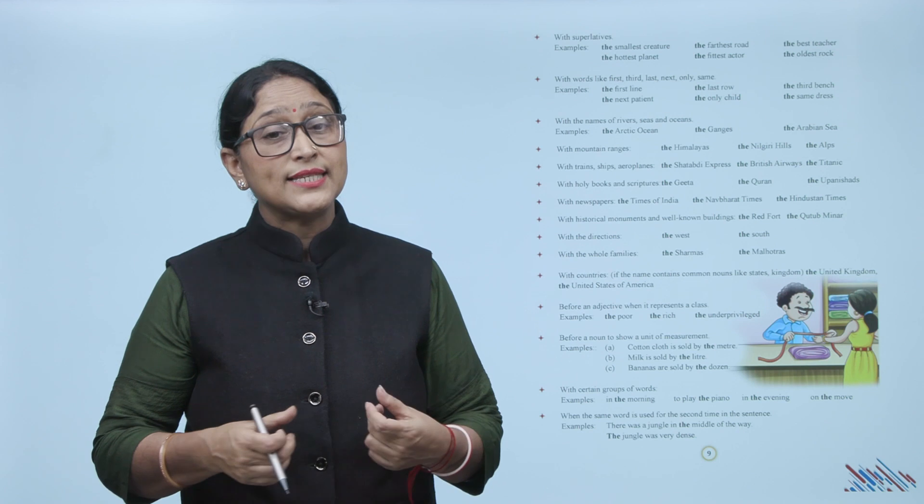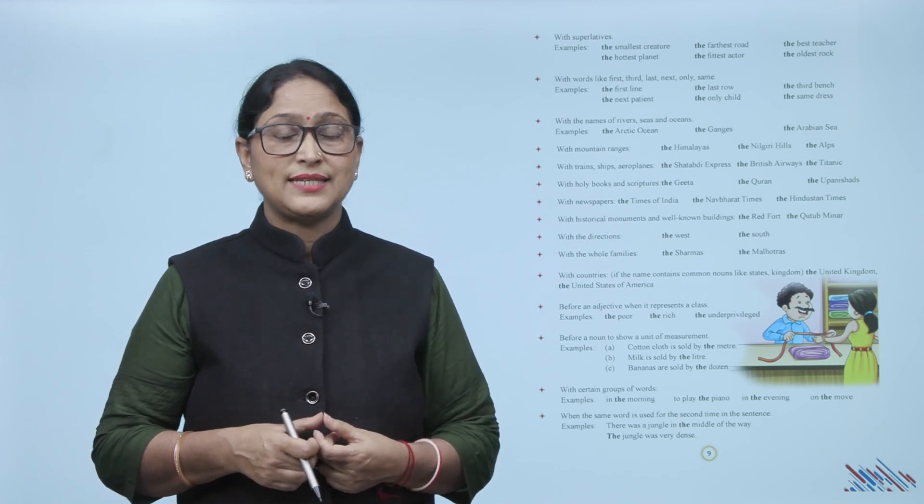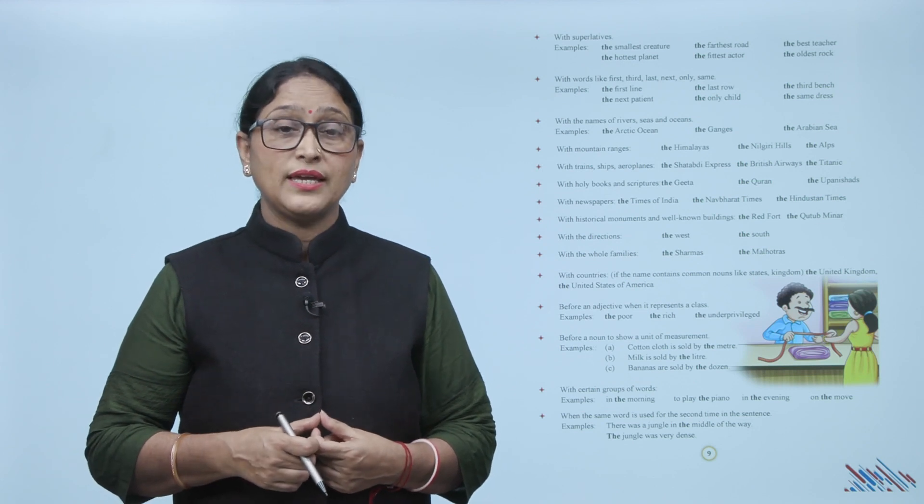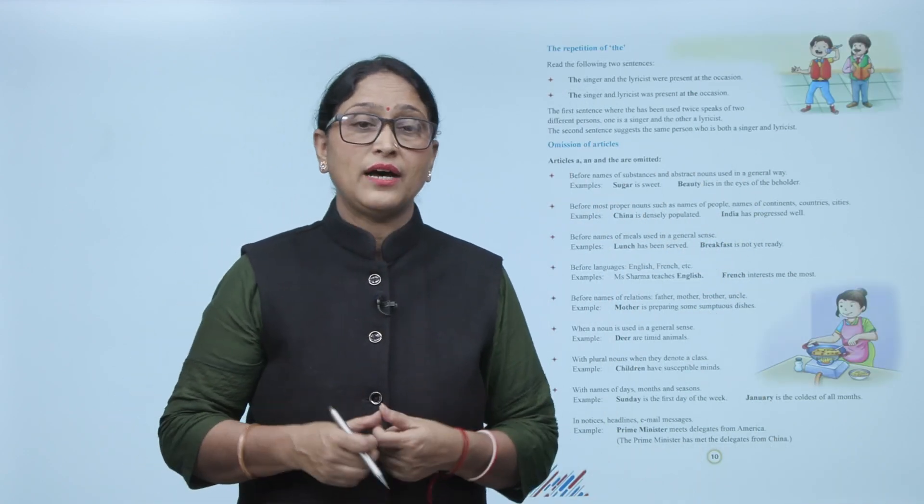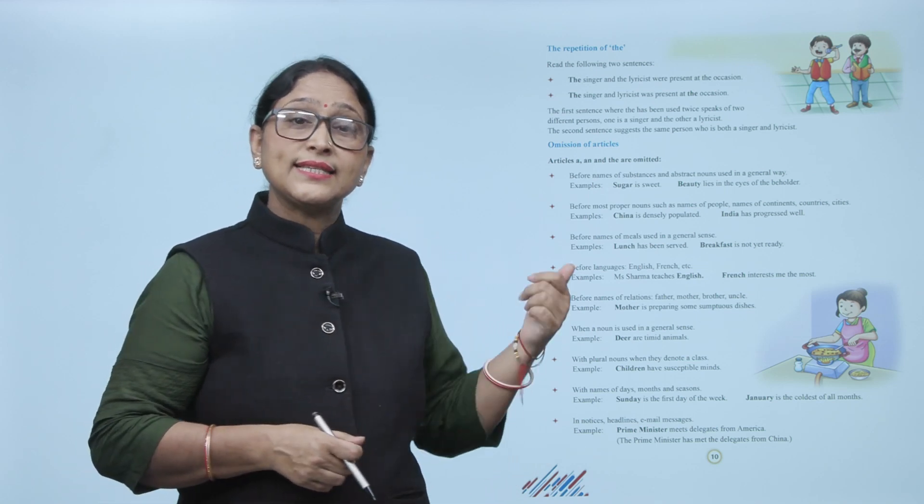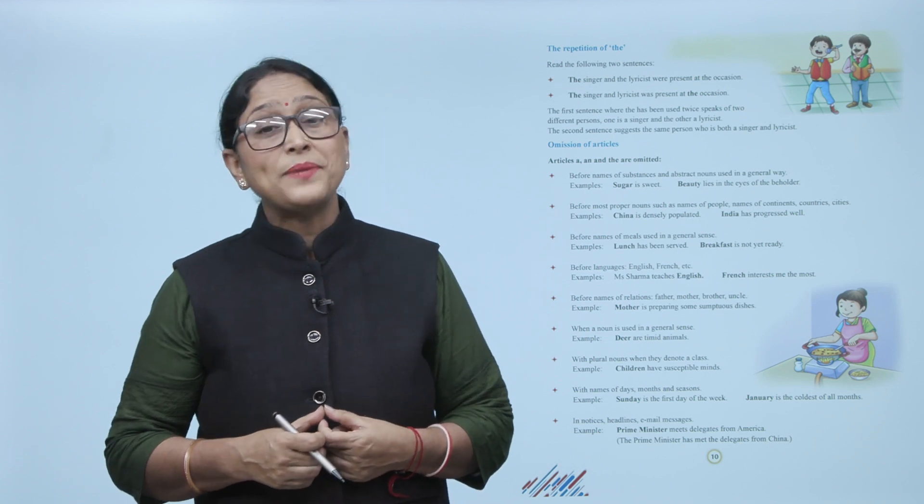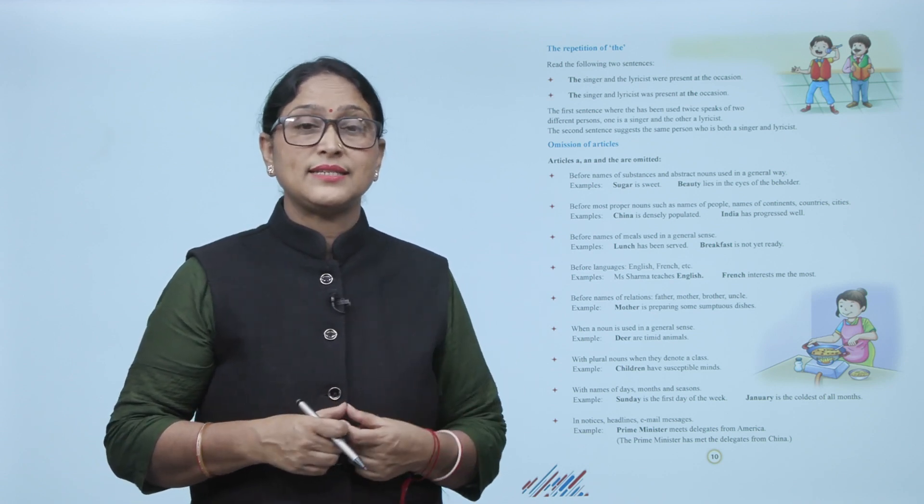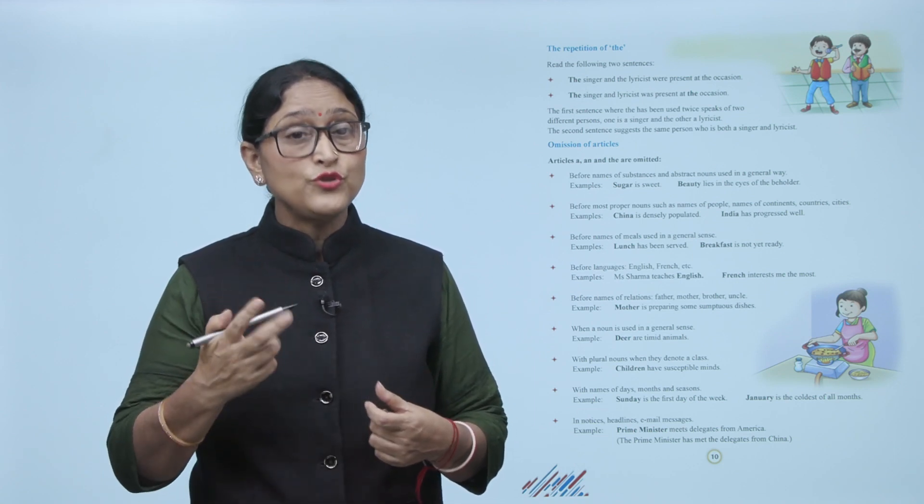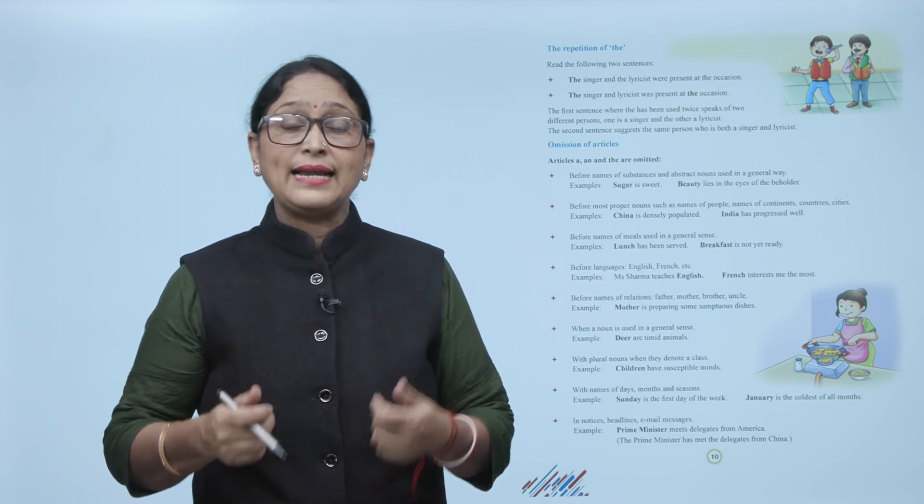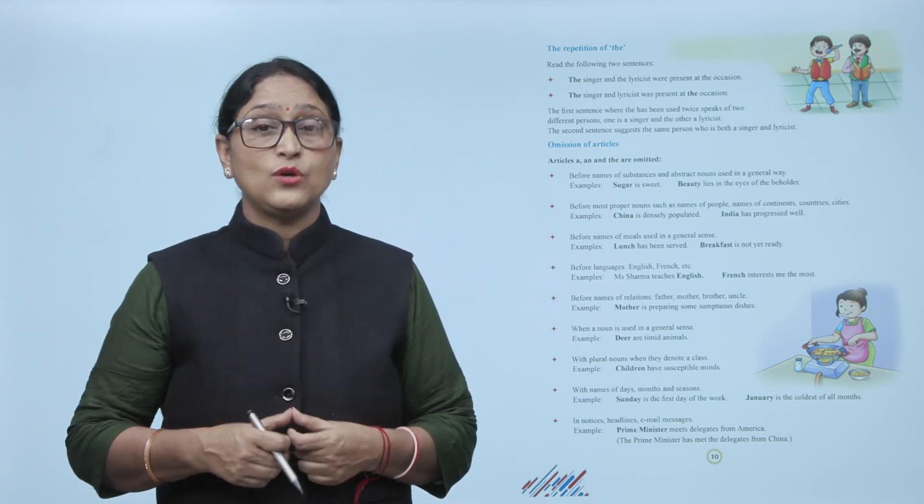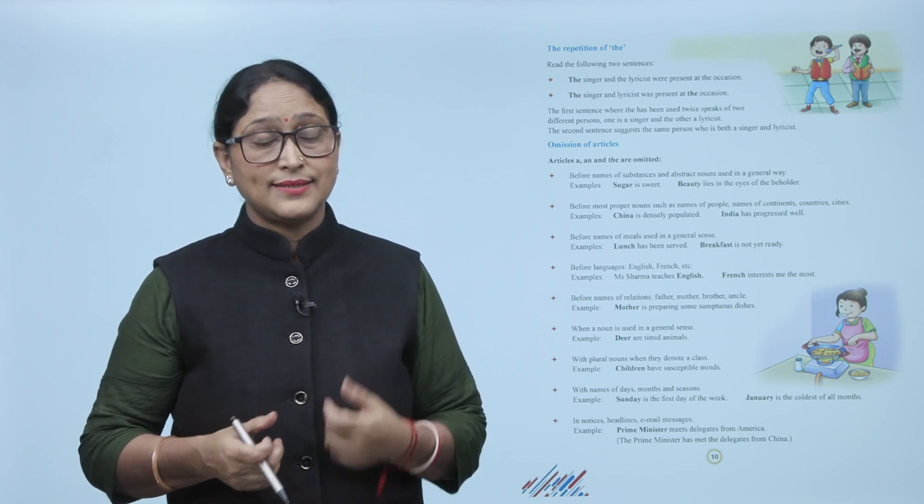When the same word is used for the second time in the sentence. Examples: there was a jungle in the middle of the way. The jungle was very dense. The repetition of the. Read the following two sentences: the singer and the lyricist were present at the occasion. The singer and lyricist was present at the occasion. The first sentence, where the has been used twice, it speaks of two different persons. One is a singer and the other a lyricist. The second sentence suggests the same person who is both a singer and lyricist.